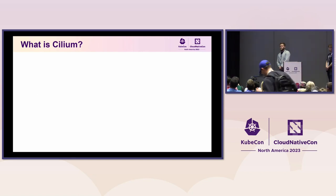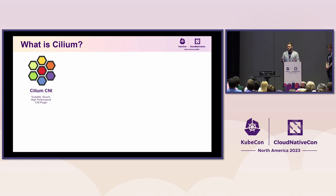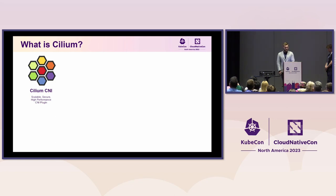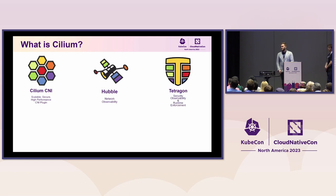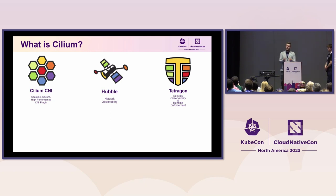Let's start with Cilium. What is Cilium? Probably most of you have heard about it. Most popular is Cilium CNI, which is a secure scalable CNI plugin for Kubernetes. Except for Cilium CNI, we also have Hubble for network observability, and last but not least, Tetragon, which allows you to secure your container runtime with policies similar to network policies.